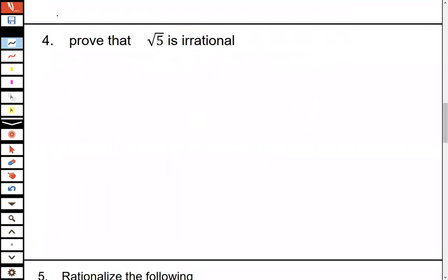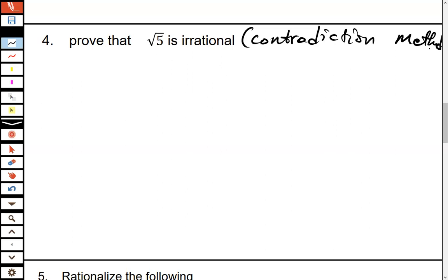The next question: prove that the square root of 5 is irrational. We use the contradiction method. We begin by assuming that √5 is a rational number.